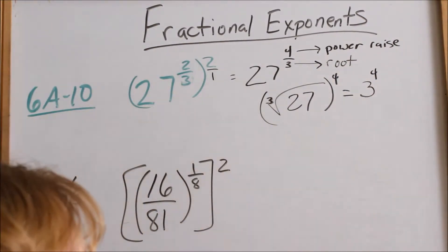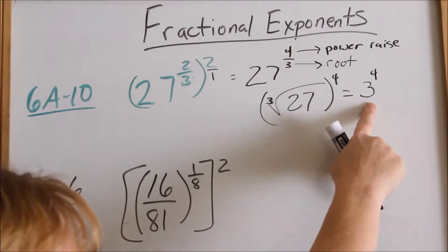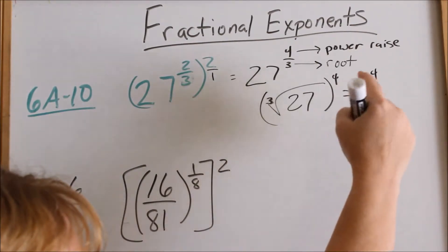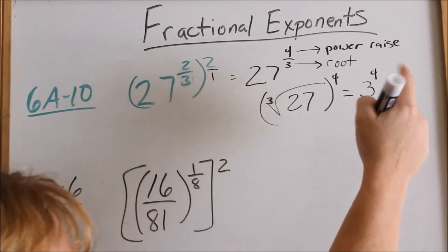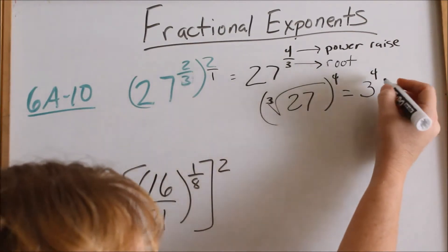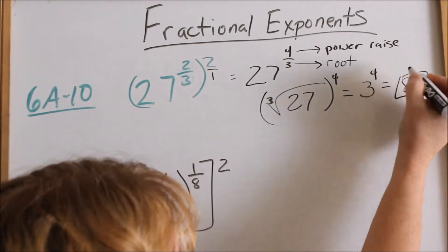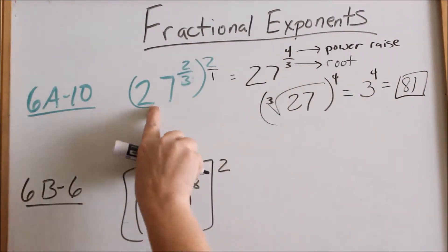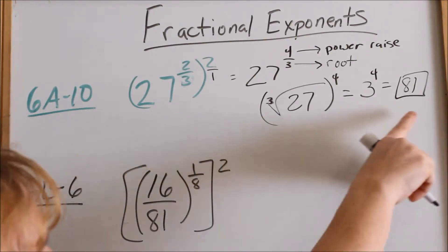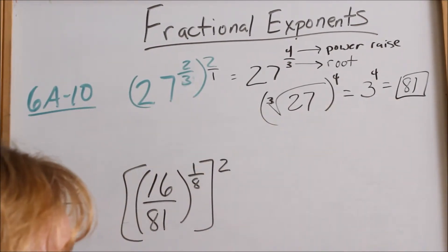So the cube root of 27 is 3, and then we still want to raise it to the 4th power. 3 times 3 is 9, times 3 is 27, times 3 is 81. So 3 to the 4th is 81. When you have numbers, simplify them all the way down as much as you possibly can.